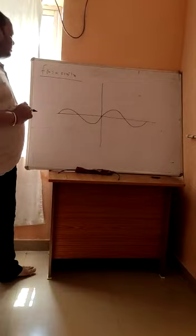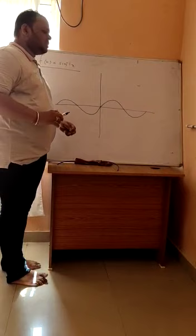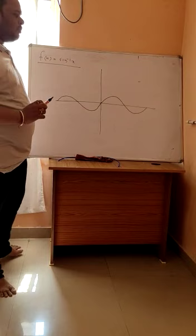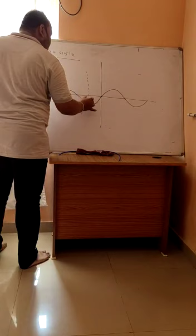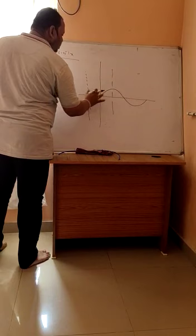We have to redefine the function f(x) = sin(x) such that the function f(x) will be bijective, meaning the function will be one-one and onto. So we take a portion from the total graph for which f(x) = sin(x) will be one-one and onto. This is the redefined portion for which f(x) will be bijective.